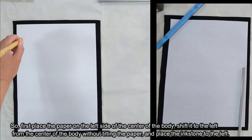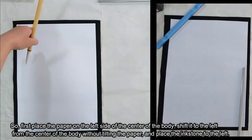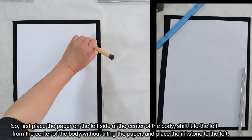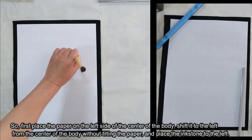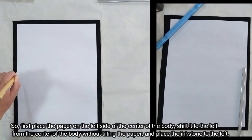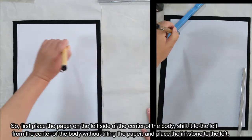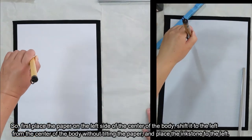First place the paper on the left side of the body and shift it to the left from the center of the body without tilting the paper. And place the ink stone to the left.